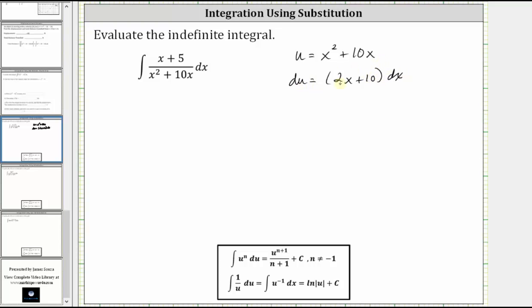So differential u is equal to the quantity two x plus 10 times dx. Now looking at the integral, notice how we have the quantity x plus five dx. While they don't match, notice how two x plus 10 does have a common factor of two. Let's factor out two from two x plus 10. This gives us differential u is equal to two times the quantity x plus five dx.